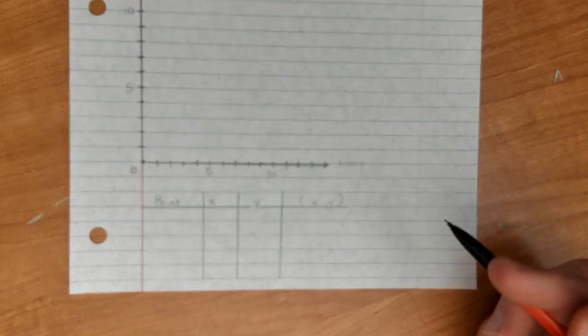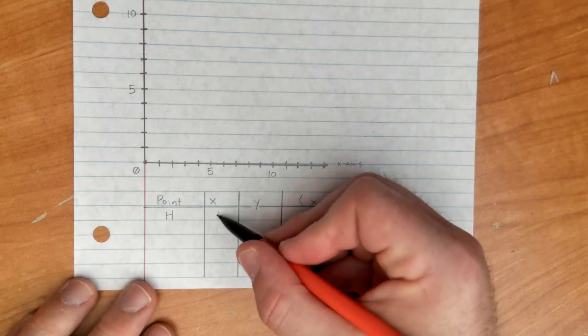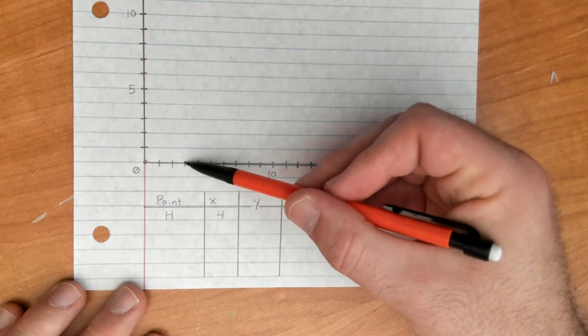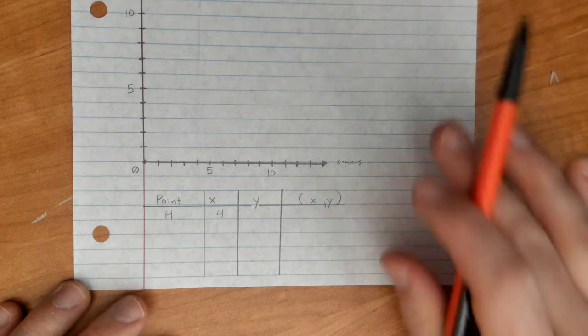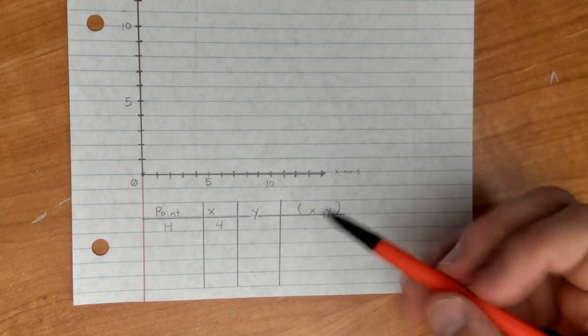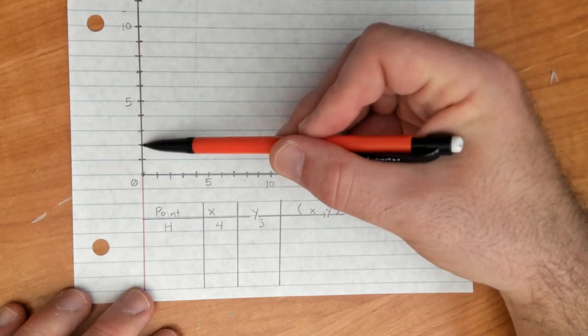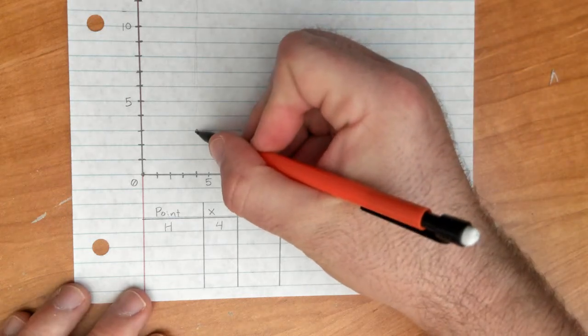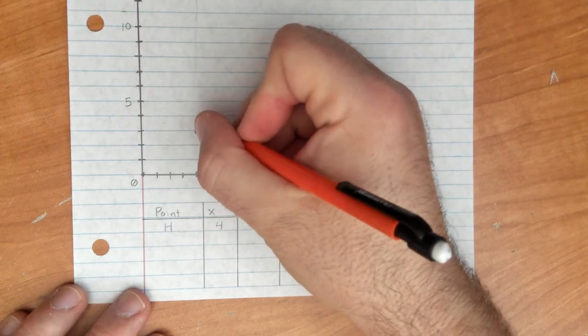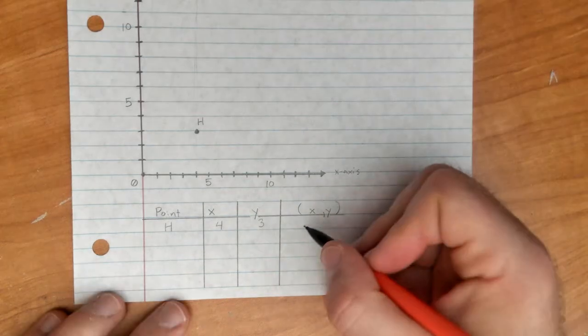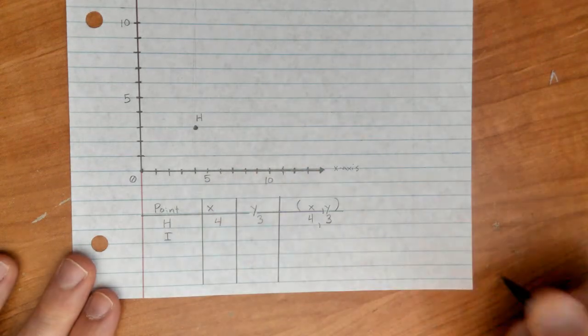Okay, so our first point is going to be point H, and point H is going to have an x-coordinate of four, which means we'll count over one, two, three, four. It's going to be on this line. Now, if I had graph paper, it would be an actual line, but we'll make do as best we can. Y will be three. So up one, two, three. Point H is going to be right there.